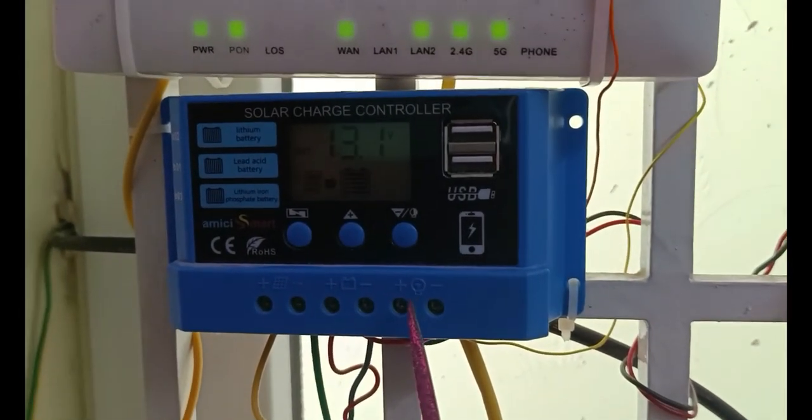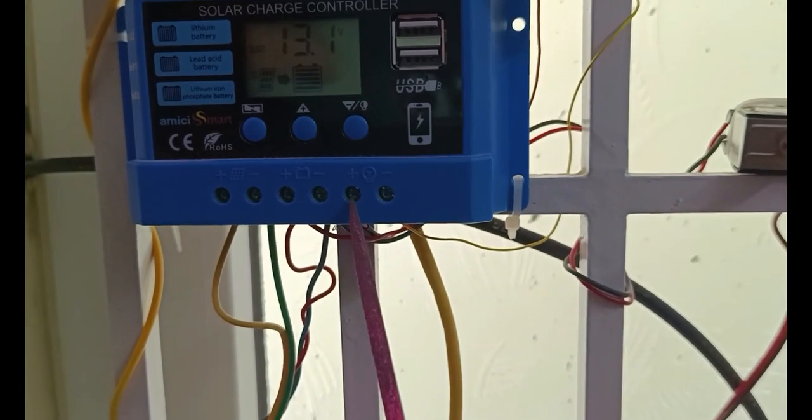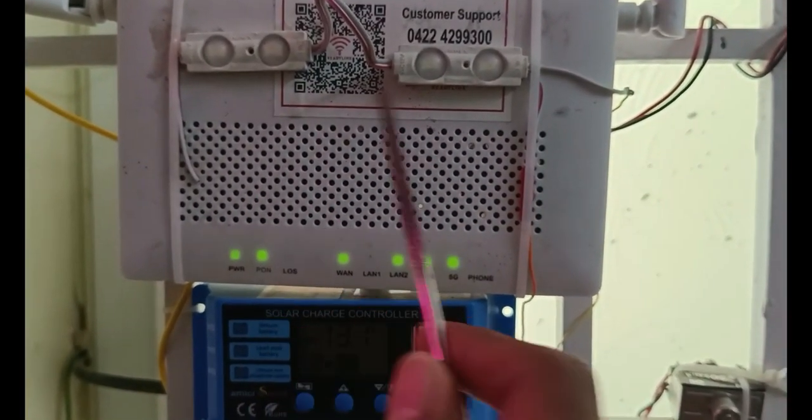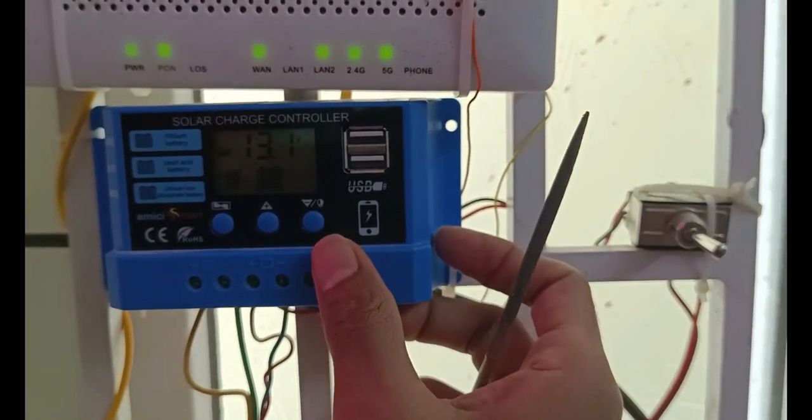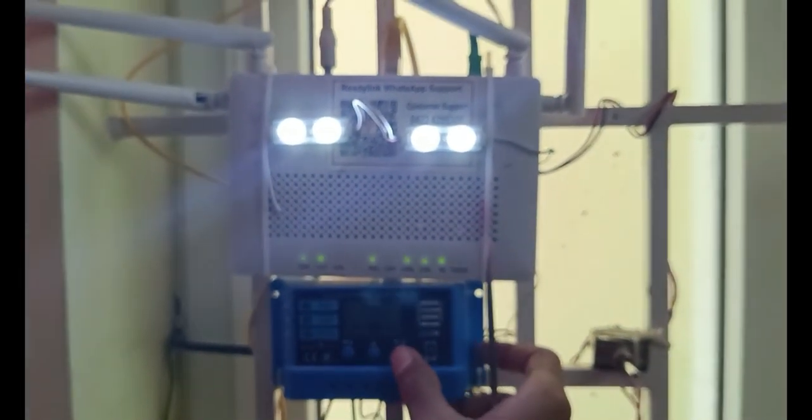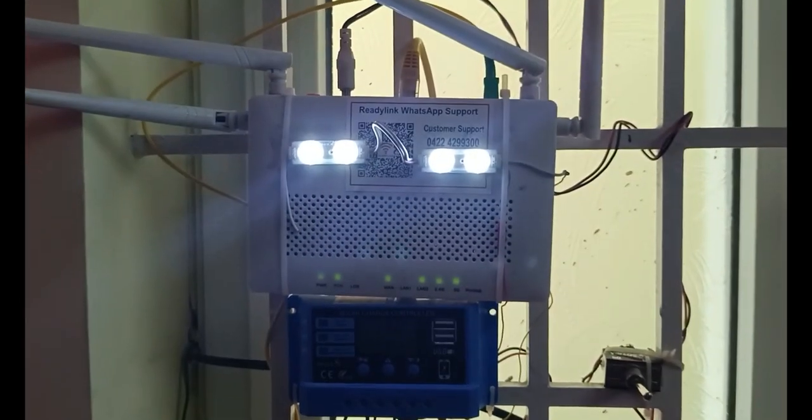It has three buttons. One is to set the battery chemistry and to check the battery voltage levels. Third one is for turning on LED light when needed and it also can turn on LED light during the night time.